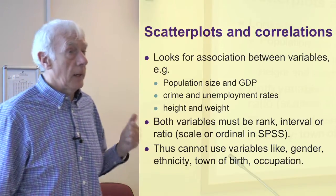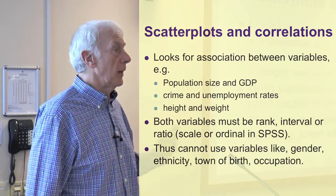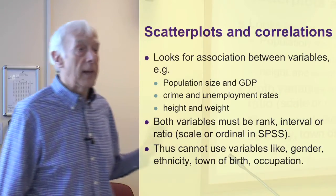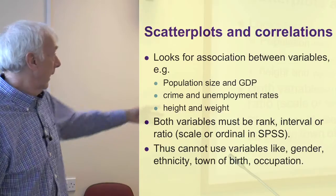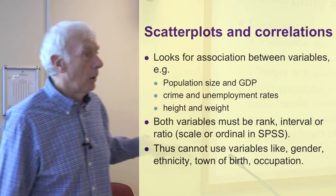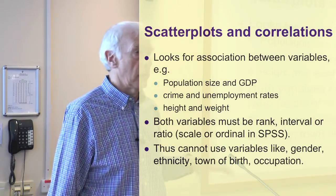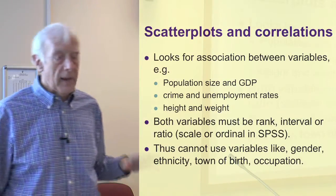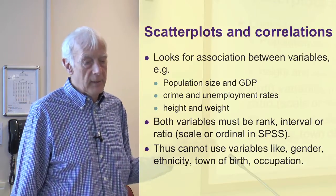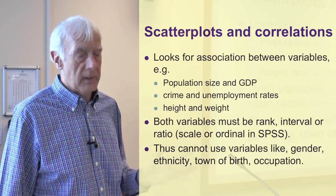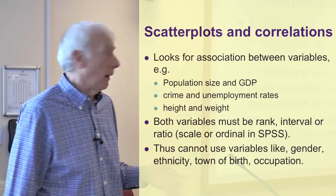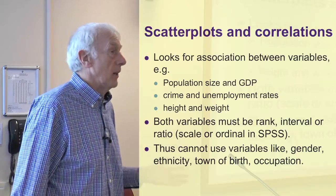The important thing is we can't use correlations on the categorical variables we were using last week for cross-tabulations — things like ethnicity, gender, town of birth, occupation, and so on. Those can't be used in scatter plots and correlations. The variables have to be in order at least, and ideally on some kind of scale. Something like town of birth, which has no particular order, doesn't make any sense to correlate.